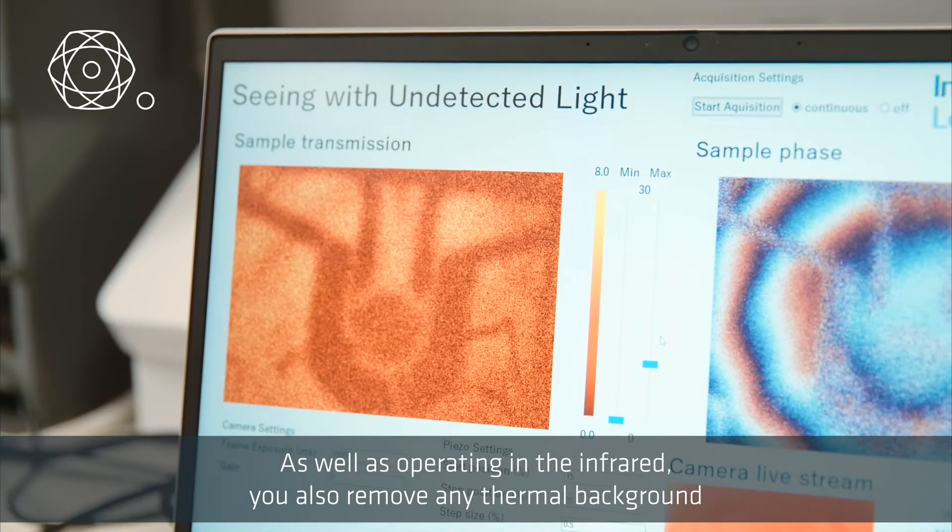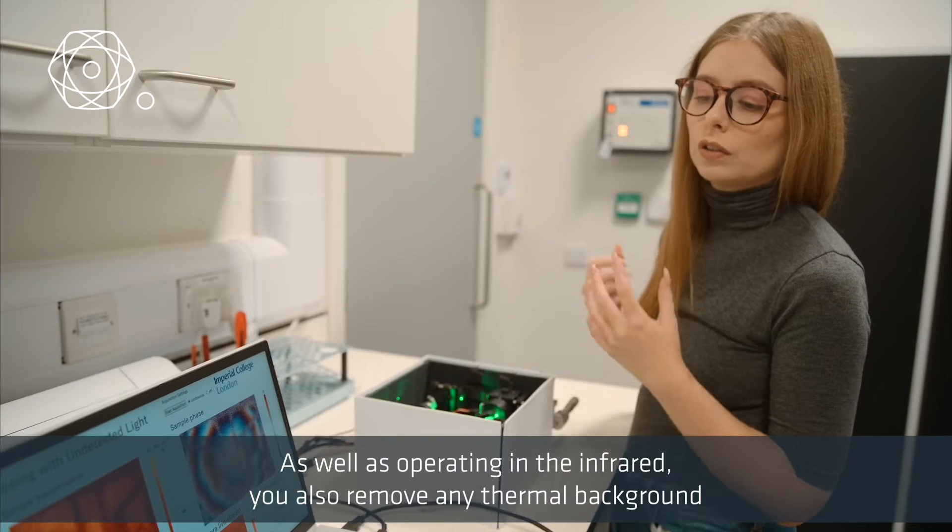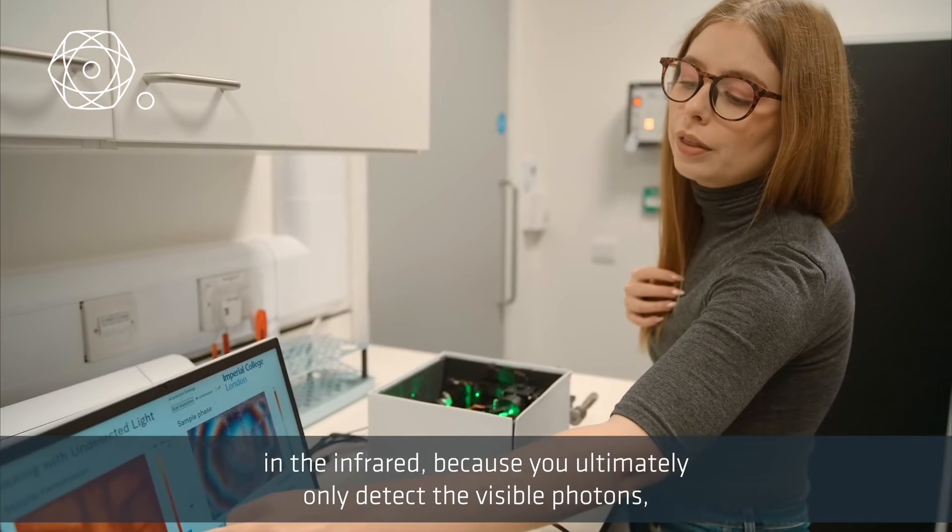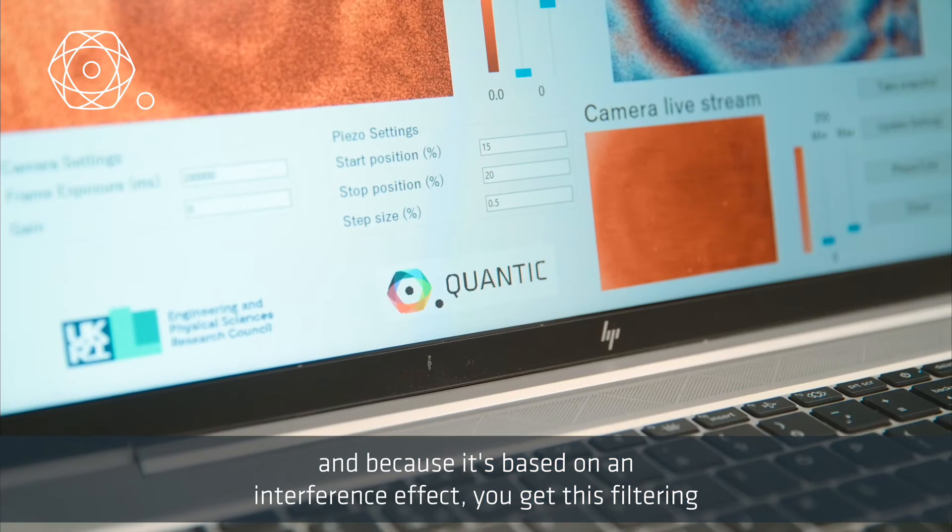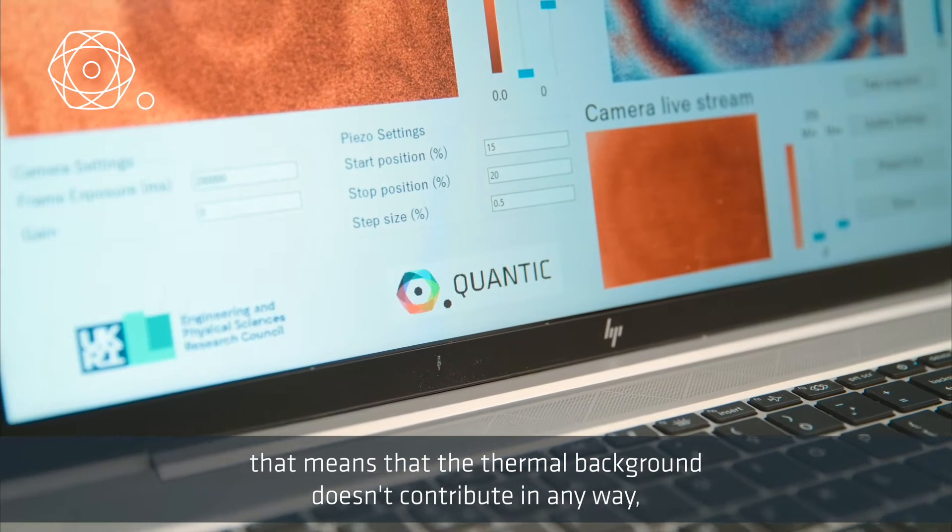As well as operating in the infrared, you also remove any thermal background in the infrared because you ultimately only detect the visible photons. And because it's based on an interference effect, you get this filtering that means that the thermal background doesn't contribute in any way.